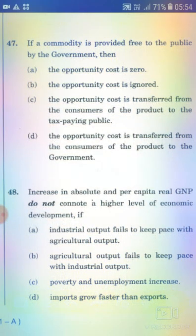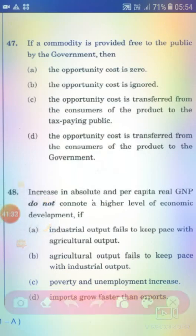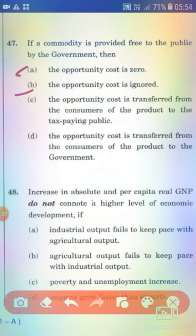If a commodity is provided free to the public by the government, then: Option A: The opportunity cost is zero. Option B: The opportunity cost is ignored. Option C: The opportunity cost is transferred from the consumers to the taxpaying public. Option D: The opportunity cost is transferred from the consumer to the government. The right answer is Option B — the opportunity cost is ignored.